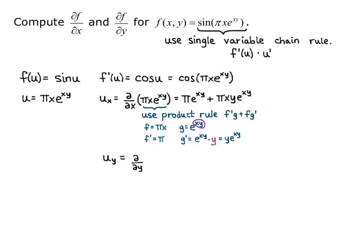Now we do the same thing but with respect to y. U sub y equals the partial derivative with respect to y of pi x e to the xy. In this case, y only appears in the exponent of the e, and pi x is just a constant multiple. So the derivative with respect to y is pi x times the derivative of e to the xy, which is e to the xy times the derivative of the exponent with respect to y — that's the constant x. So we get pi x times e to the xy times x, which simplifies to pi x squared e to the xy.